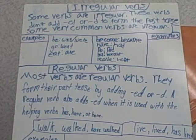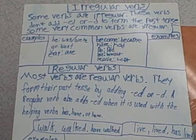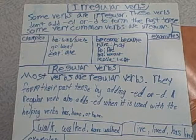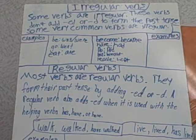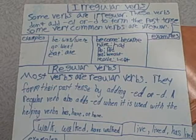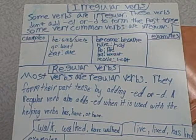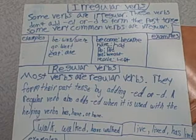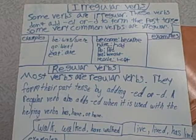Most verbs are regular verbs. They form their past tense by adding -ed or -d. A regular verb also adds -ed when it is used with the helping verbs has, have, or had.